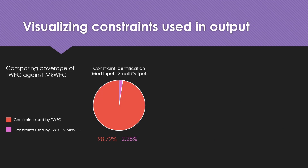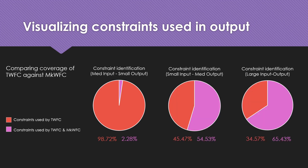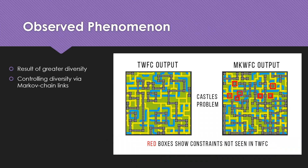When generating outputs, we observed that for a small output, tiling wave function collapse used 98.72% of the constraints utilized by MKWFC. However, as output sizes increased, TWFC used significantly fewer diverse constraints compared to MKWFC. This means MKWFC has more diversity in all cases when generating outputs. Because diversity is high, there are more constraint options, and by increasing constraint options, we have automatically increased the quality of procedural content. This can be seen in the observed phenomena where castle blocks appear in MKWFC outputs that had no such instances in TWFC — a result of greater diversity.